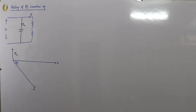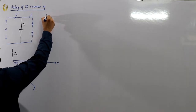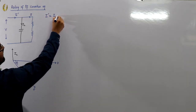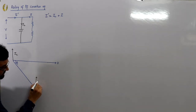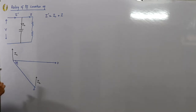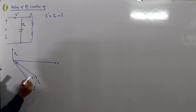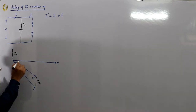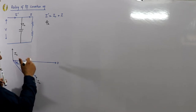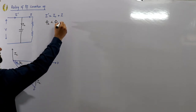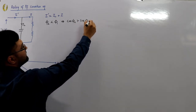After installing the power factor correction equipment, the supply current becomes I'. I' is the phasor sum of IC and the original current I. This new current I' is reduced, and the angle between the voltage and the current has also reduced to φ2. Since φ2 < φ1, cosφ2 > cosφ1, meaning the power factor has increased.